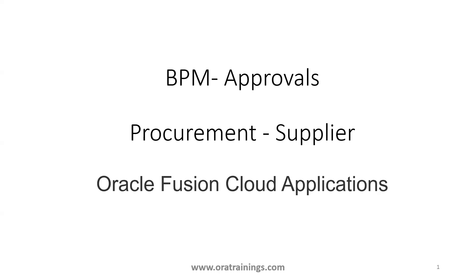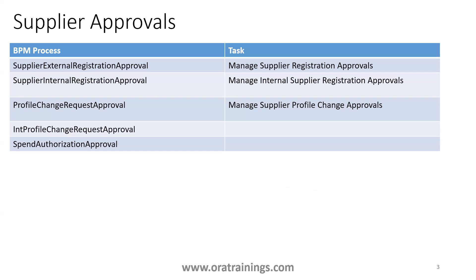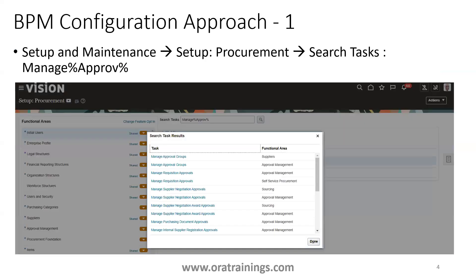Welcome to rotarynews.com. In this session we'll discuss the approvals in the supplier area in Fusion Applications — the list of available approvals and how to configure them, including some tables and queries to understand approval status. There are five approvals with respect to supplier: external supplier registration, internal supplier registration, profile change request approval, internal profile change request approval, and spend authorization.